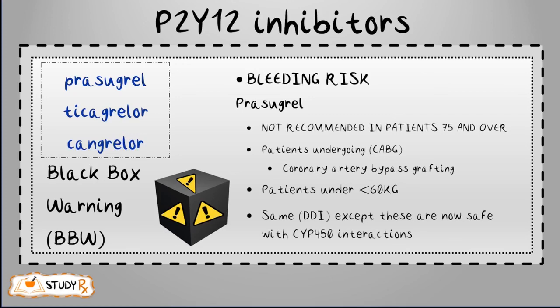CABG is used to treat severe coronary heart disease, typically caused by plaque buildup in the coronary arteries that supply oxygen-rich blood to the heart. Additional risk factors for increased internal bleeding include patients under 60 kg, warfarin, heparin, fibrinolytic therapy, and long-term use of NSAIDs such as ibuprofen and naproxen. Prasugrel, ticagrelor, and cangrelor may also be used as secondary prevention in acute coronary syndrome.